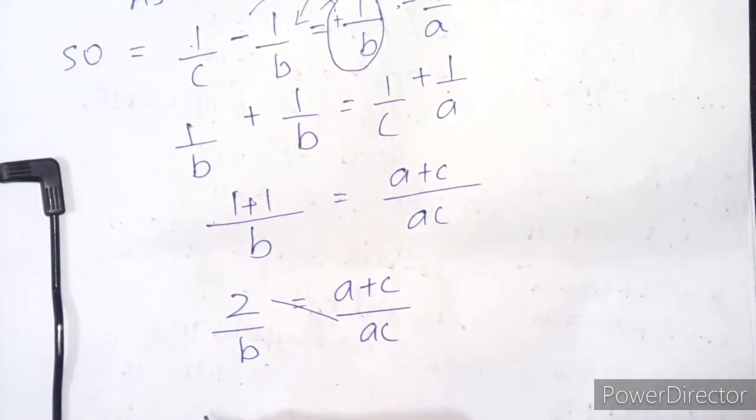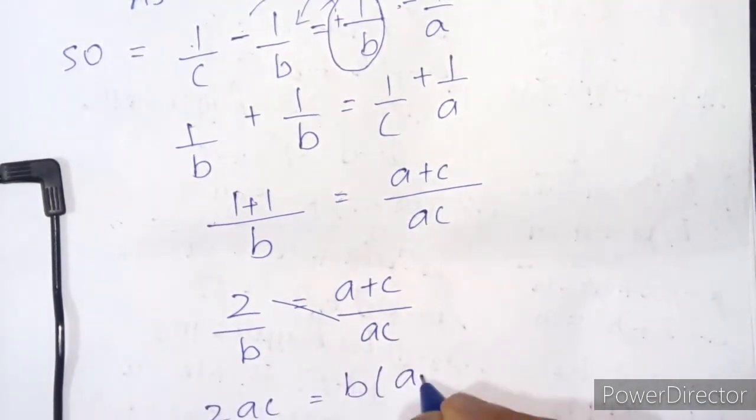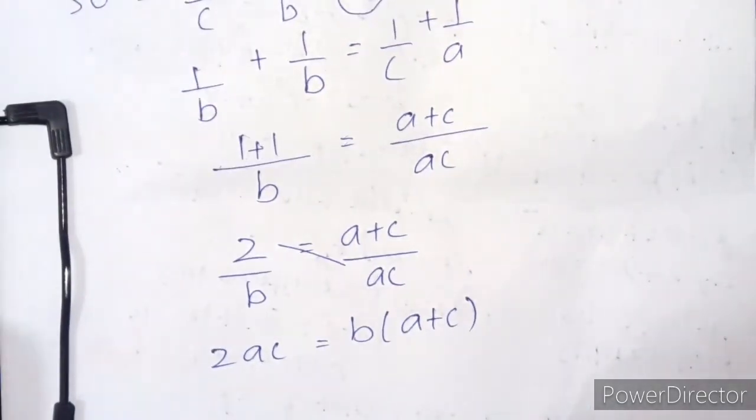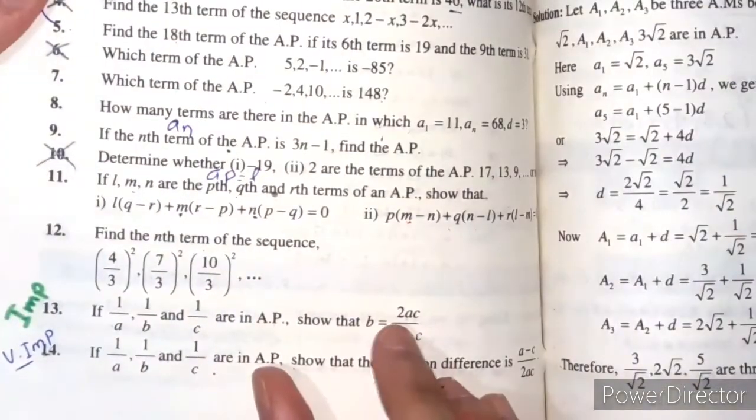Cross multiplying here, we get 2ac = b(a+c). Now in the question, we need to find b, so b equals...